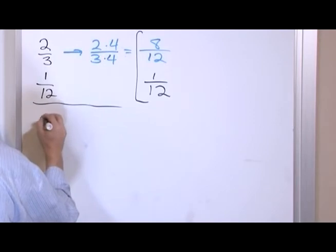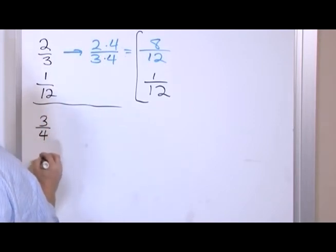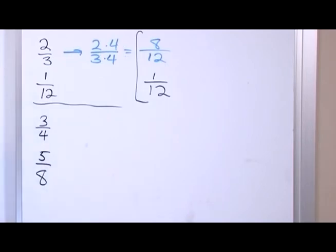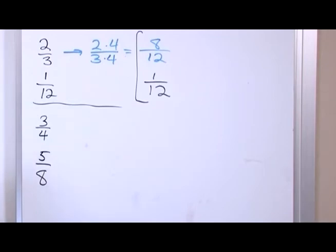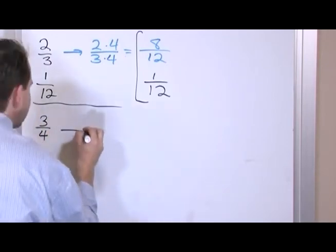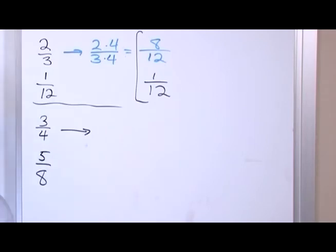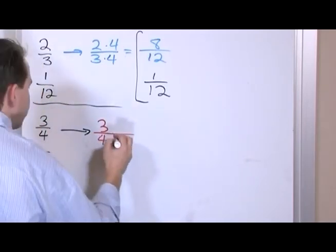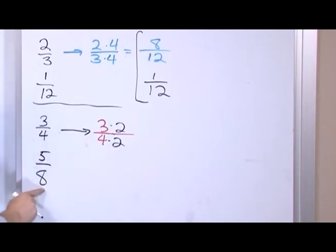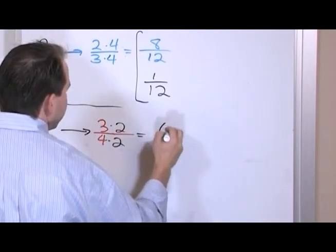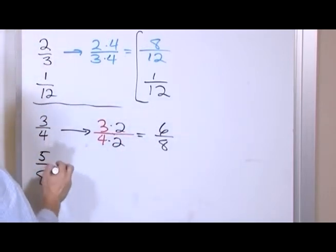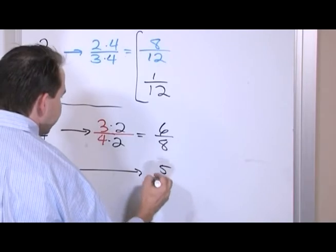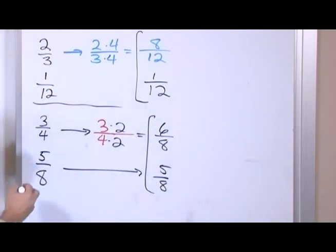What if I have three-fourths and five-eighths? We get into something a little more interesting. I notice I have a four, so I can take three-fourths and multiply by two on the top and the bottom — because four times two is eight, I'm trying to transform that denominator. Two times three is six, so this becomes six-eighths. I don't really have to mess with five-eighths at all, so I keep it as five-eighths. Now these two fractions have a common denominator.